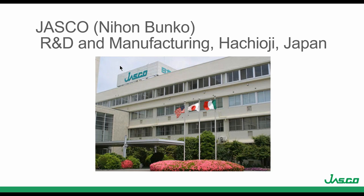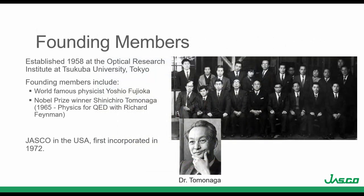First, just a few words about JASCO. JASCO is the Japanese Spectroscopy Company, also known in Japan as Nihonbunko. The R&D and manufacturing facilities are in Hachioji, Japan. Their founders are the physicist Yoshio Fujioka and Shinichiro Tomonaga, who shared the Nobel Prize in Physics in 1965, with Dr. Richard Feynman in quantum electrodynamics. JASCO was established in the United States in 1972, and we are located in Eastern Maryland.